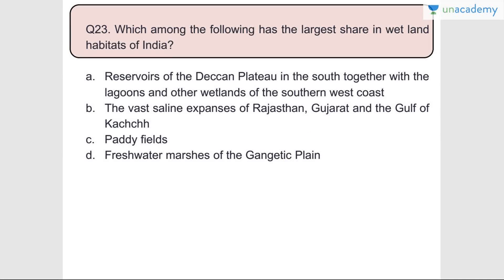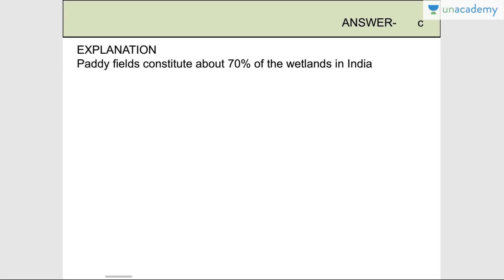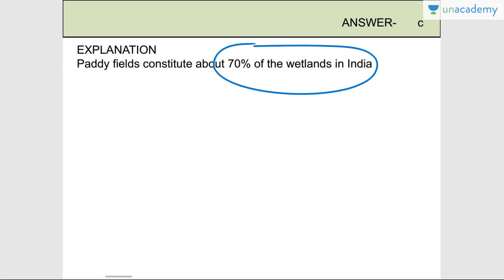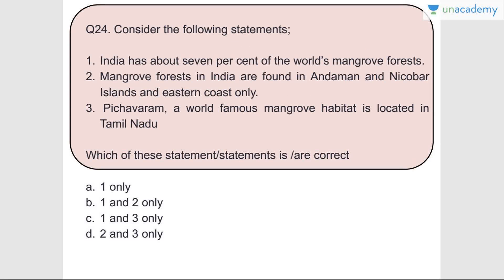Question number twenty-three: Which among the following has the largest share in wetland habitats of India? Answer is C - paddy fields. Paddy fields constitute about 70% of the wetlands in India. Paddy means rice.